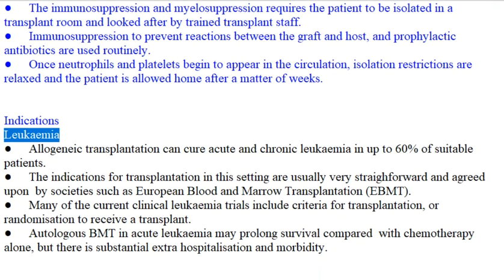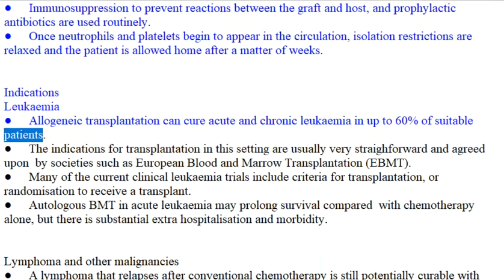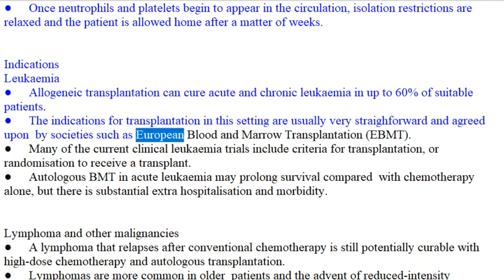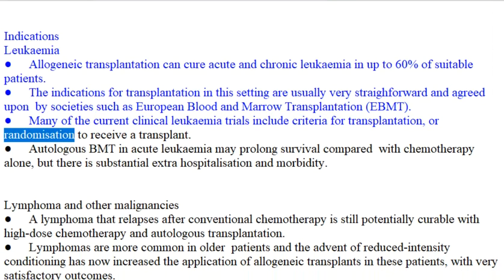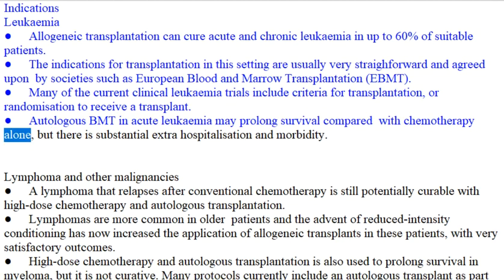Indications — Leukemia: Allogeneic transplantation can cure acute and chronic leukemia in up to 60% of suitable patients. The indications for transplantation are usually agreed upon by societies such as European Blood and Marrow Transplantation (EBMT). Many current clinical leukemia trials include criteria for transplantation or randomization to receive a transplant. Autologous BMT in acute leukemia may prolong survival compared with chemotherapy alone, but there is substantial extra hospitalization and morbidity.